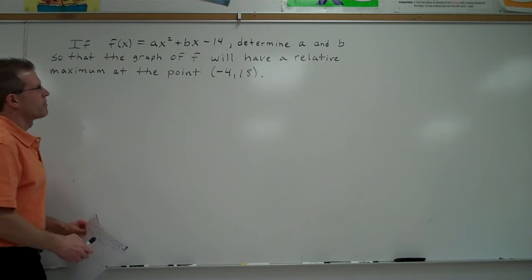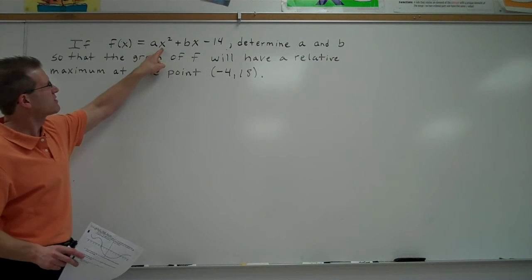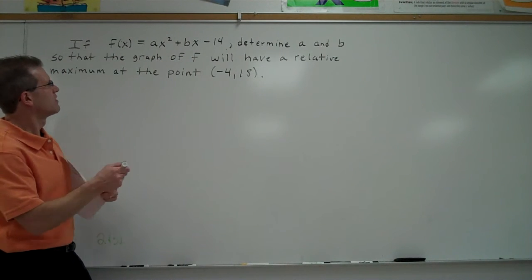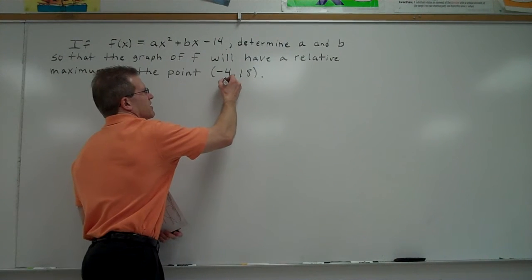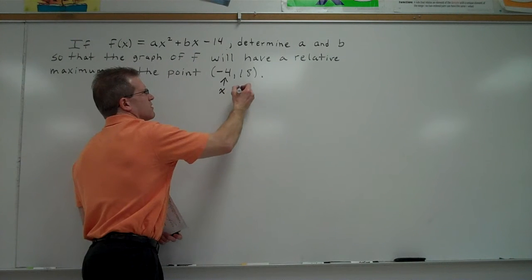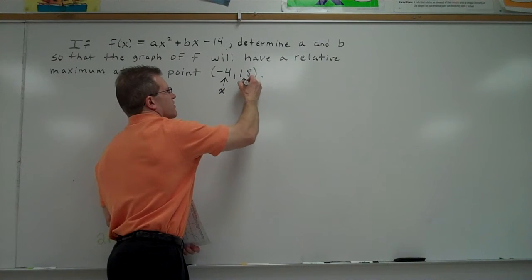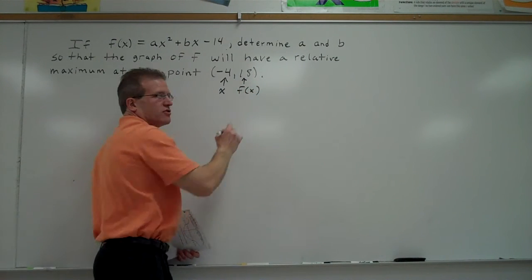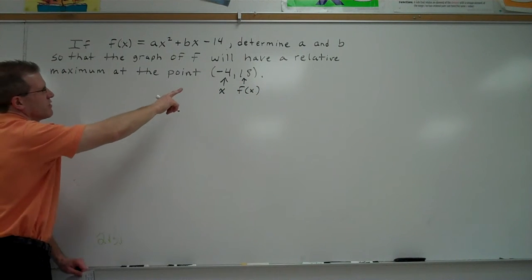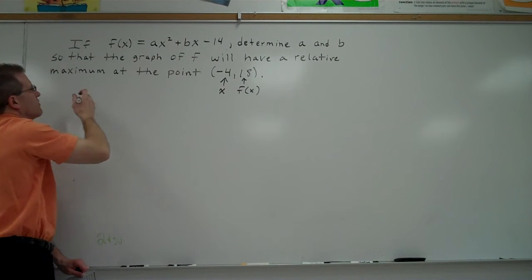So first of all, if I plug negative 4 in for x in this equation, what should the f(x) value come up to? Negative 4, 18, yep. So they're giving you an x and a y or an x and an f(x). So you can get one equation by plugging in negative 4 for x and 18 for f(x).